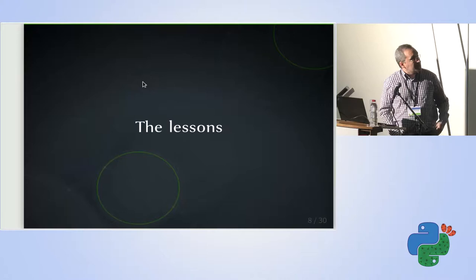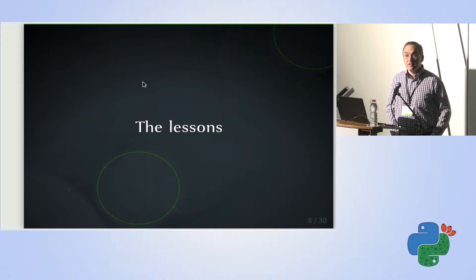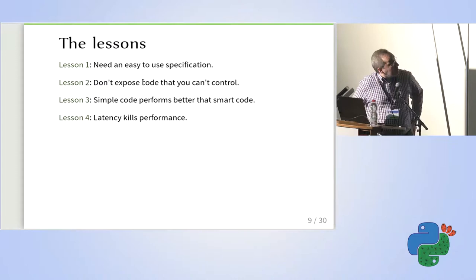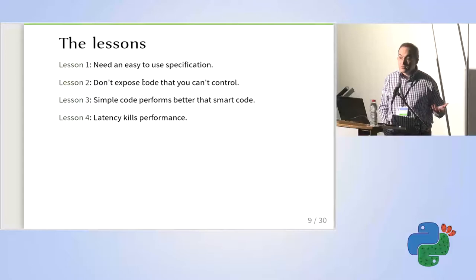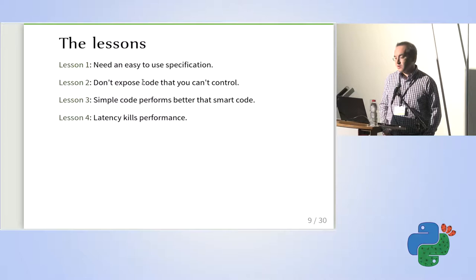This project has been in development since 2010. In that time we found a lot of issues and found some solutions. These are the lessons I want to share with you. I selected four lessons: first, the need for an easy-to-use specification of the API; second, try not to expose code in your API that you can't control; third, simple code performs better than smart code; and fourth, latency is very important for performance — it will kill the performance of your application if you are not careful.